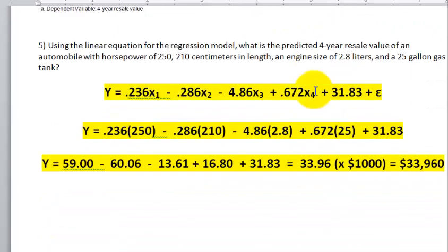And the last question is, we're going to substitute these values for horsepower, length, engine size, and gas capacity, plug them into the equation, and we're going to get an estimated calculation of this car should resale for about $33,960 according to our multiple regression model, which is pretty darn accurate. I hope that helps. And that's stepwise regression. MGZ out.